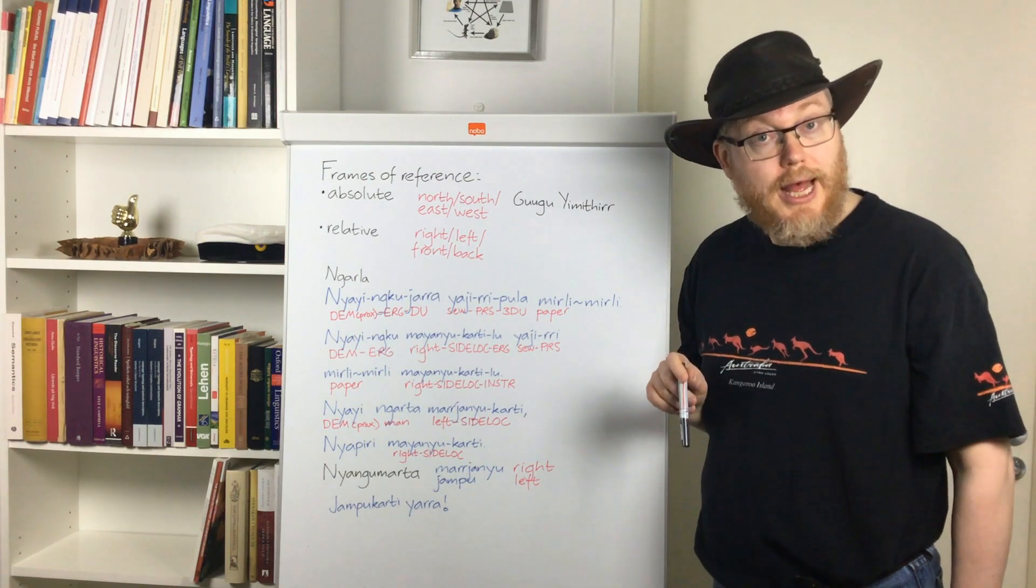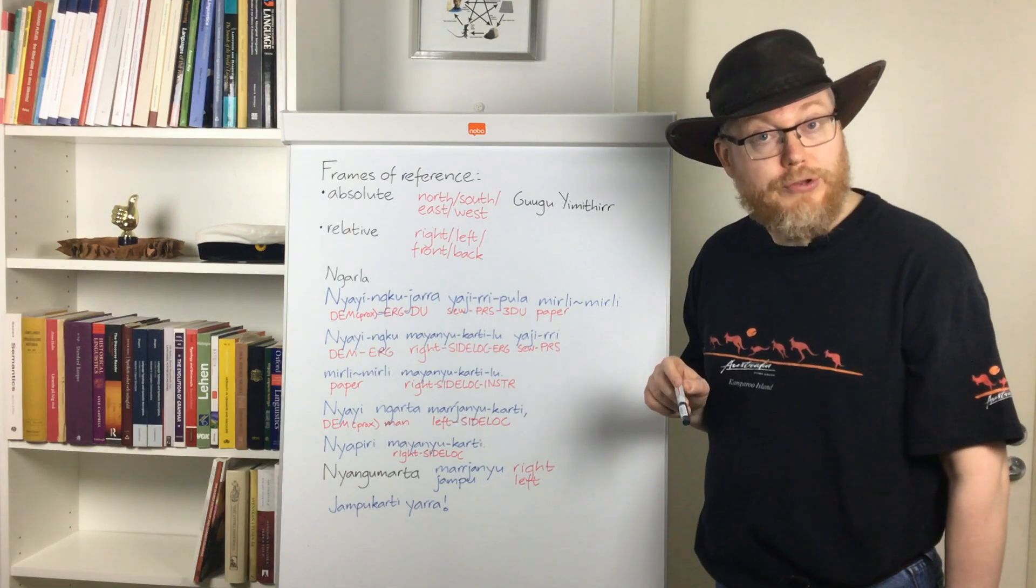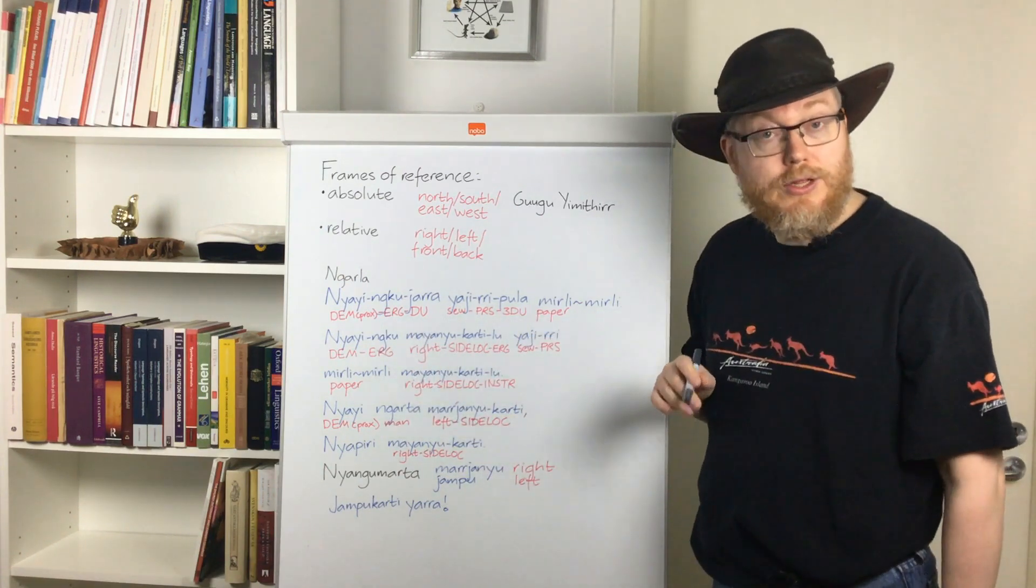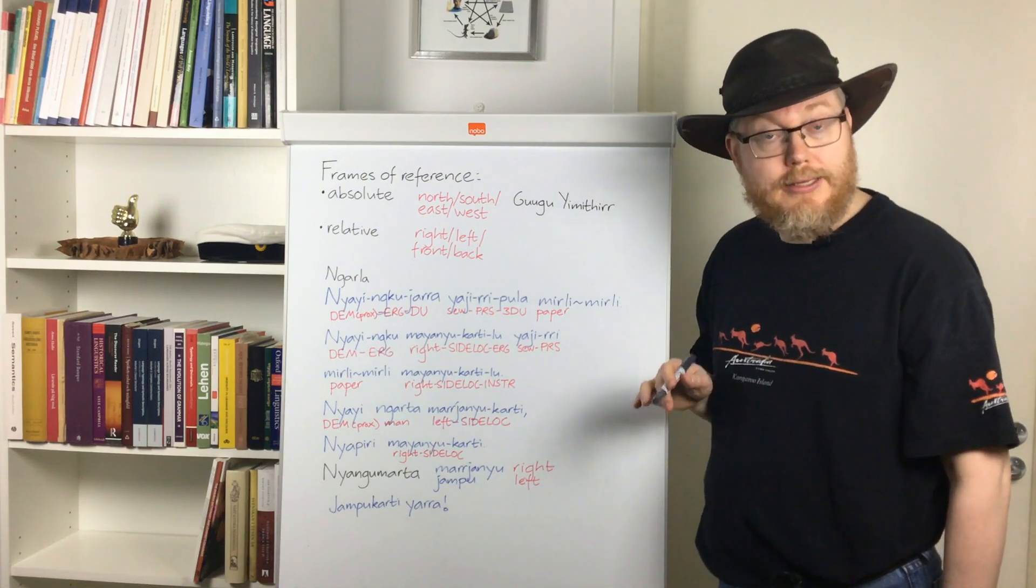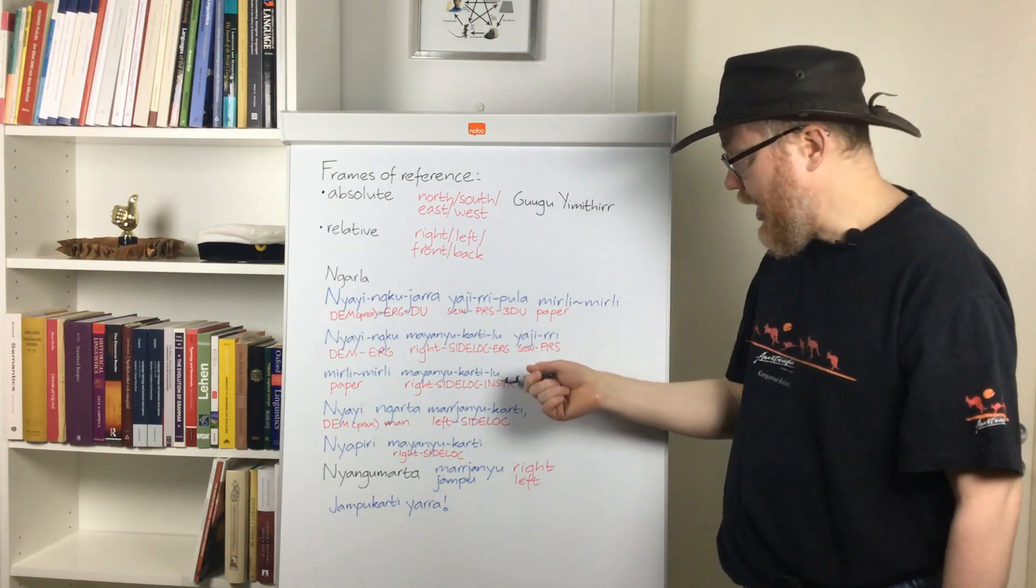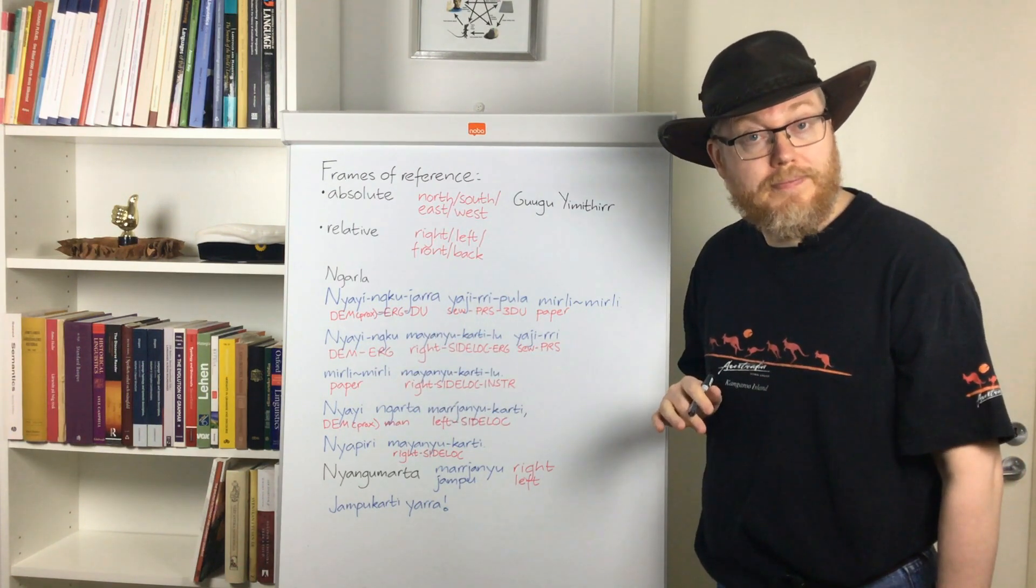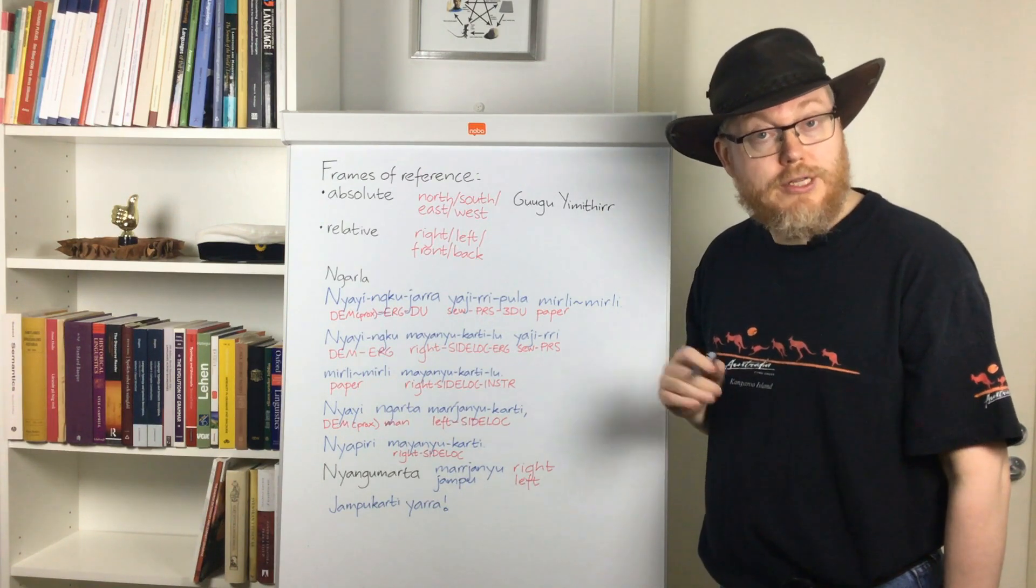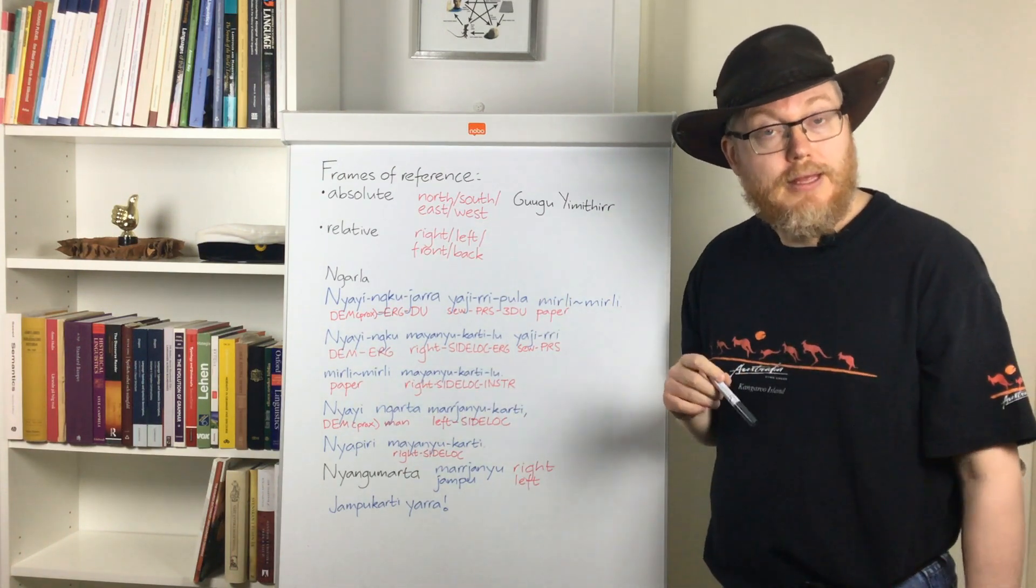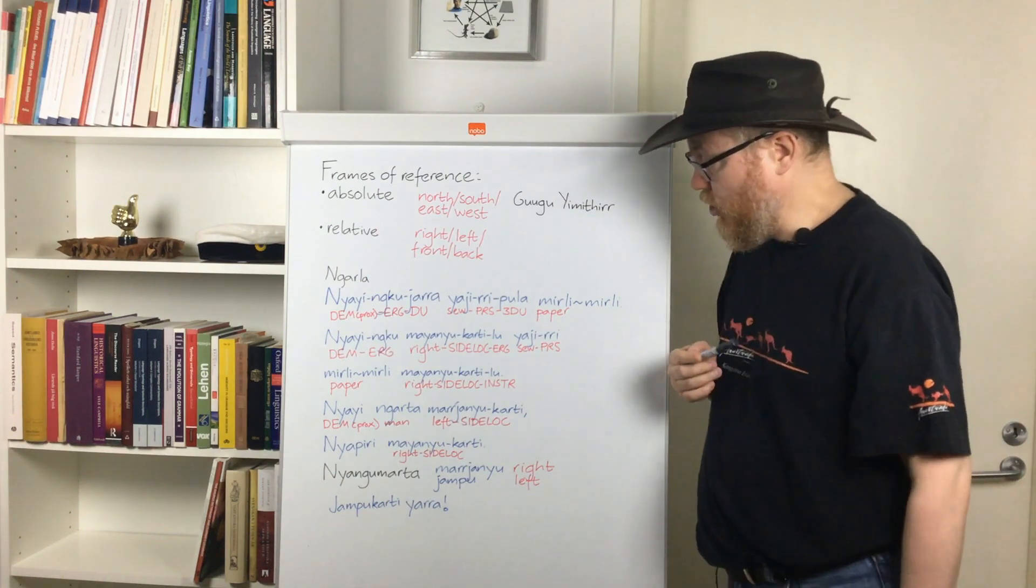So looking first at Nara. This example here was one that my consultant found particularly funny. And the thing here is that we have lu here in two different functions which we can tell from the fact that lu here is glossed erg, ergative, and here instrumental. Majanyu is the word for right in the language and kadhi is side locative which is a locative case they have which means to the side of, on the side of, and things similar to that.